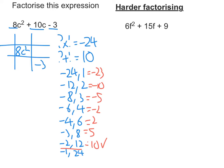So now let's put those into my grid. So it would be negative 2c and positive 12c. Now let's factorise rows and columns. So 8c squared and negative 2c, the first column. Well, the common factor is 2c. 12c and negative 3, well, that's plus 3, taking the sign of the box nearest to it.